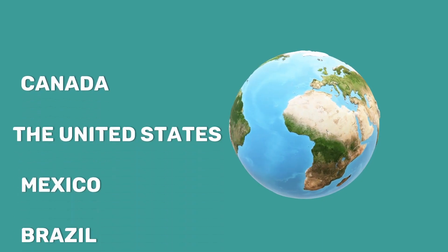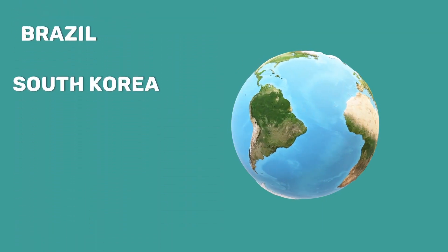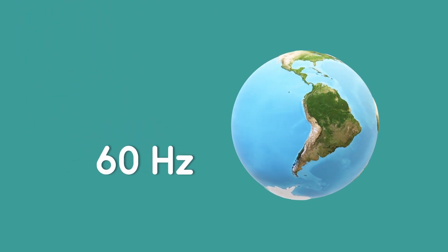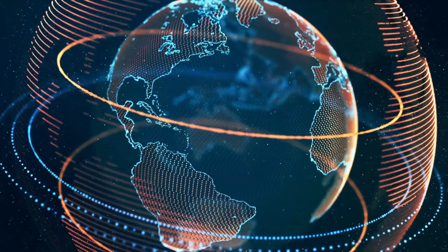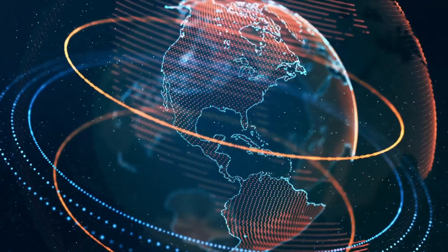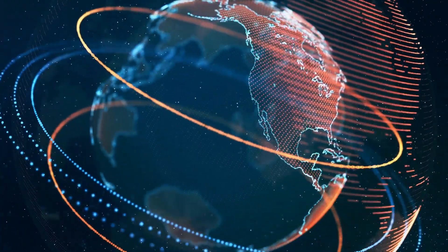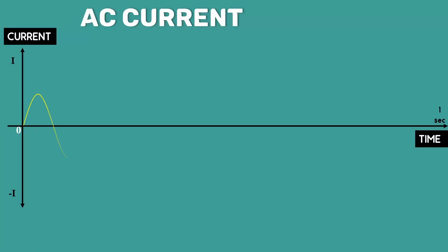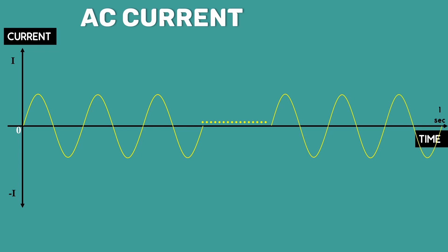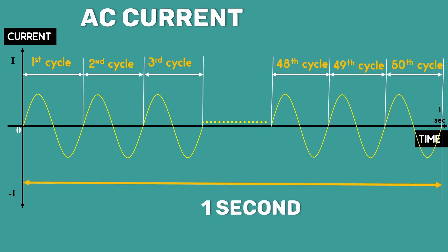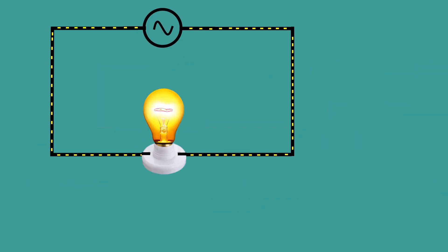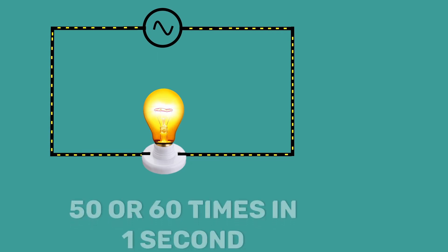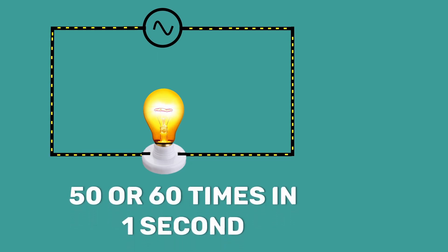While other countries like Canada, the United States, Mexico, Brazil, and South Korea use a 60 hertz frequency. There are approximately 40 countries that use 60 hertz, while the rest typically run on 50 hertz. That means in one second we'll have 50 or 60 cycles depending on which country we are from, and the electrons go back and forth 50 or 60 times in one second.